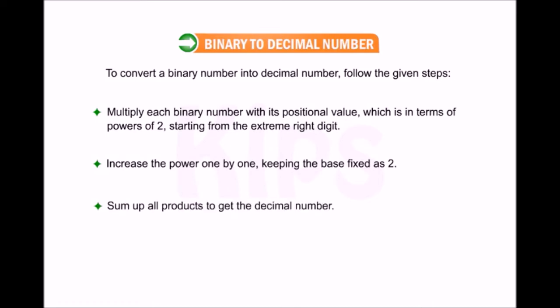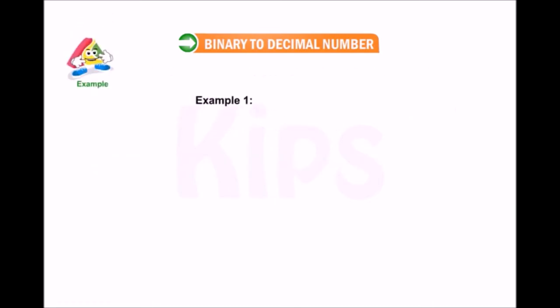Example 1: Convert 1010 in binary to decimal. In the units place we have 0, so 0 × 2^0 gives us 0. In the tens place we have 1, so 1 × 2^1 gives us 2. In the hundreds place we have 0, so 0 × 2^2 gives us 0.